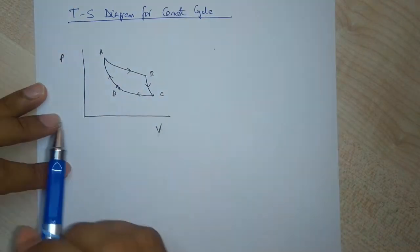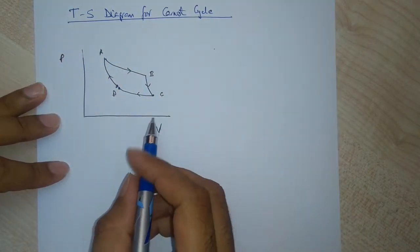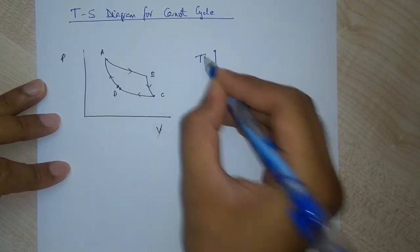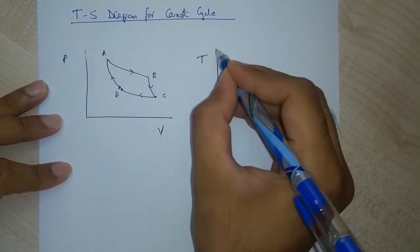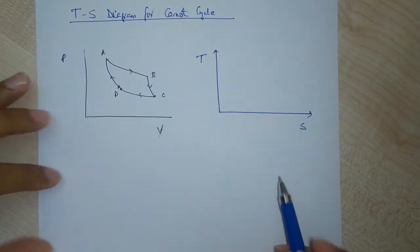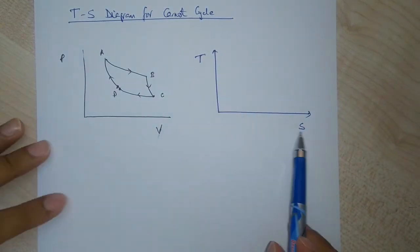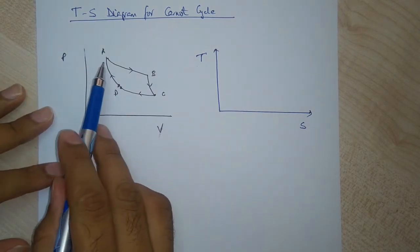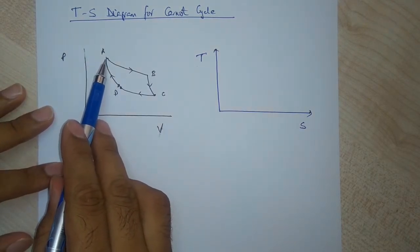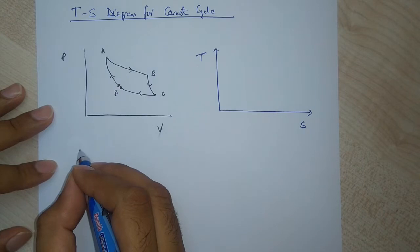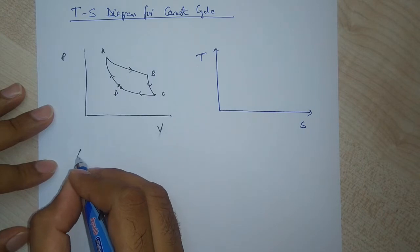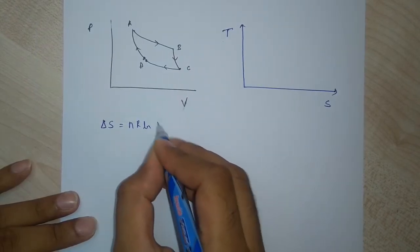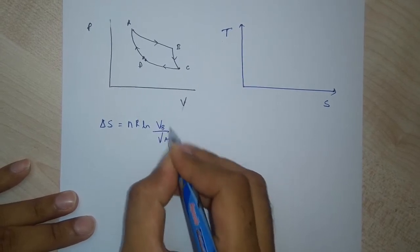Today we will learn to draw the TS diagram. Just as we have a PV diagram for a Carnot cycle, we have another type of diagram called the TS diagram, where T represents temperature and S represents entropy.